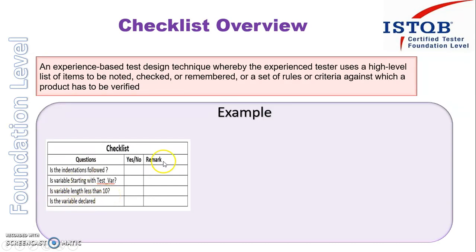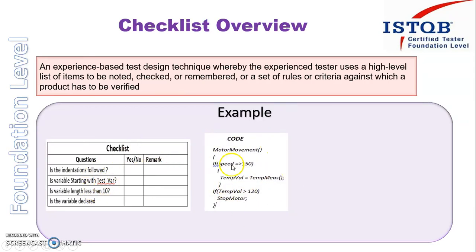Is the variable declared? Whatever variable is used in the code, he checks whether those variables are declared. This is just a sample checklist with four points. Suppose the work product he received has a few lines of code — a motor movement function with braces, and an if statement checking if speed is greater than or equal to 150, then a temperature value set to temp.